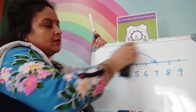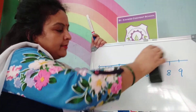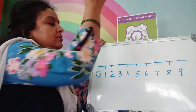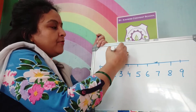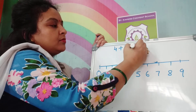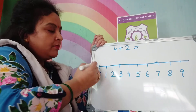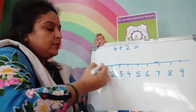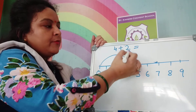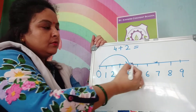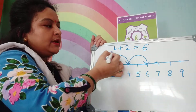Suppose you have to show the addition of 4 plus 2. The first number is 4, so you will start from number 0 and move 4 steps: 1, 2, 3, 4. Then how many more steps? 2. So: 1, 2. You will come on number 6. So the answer will be 6.